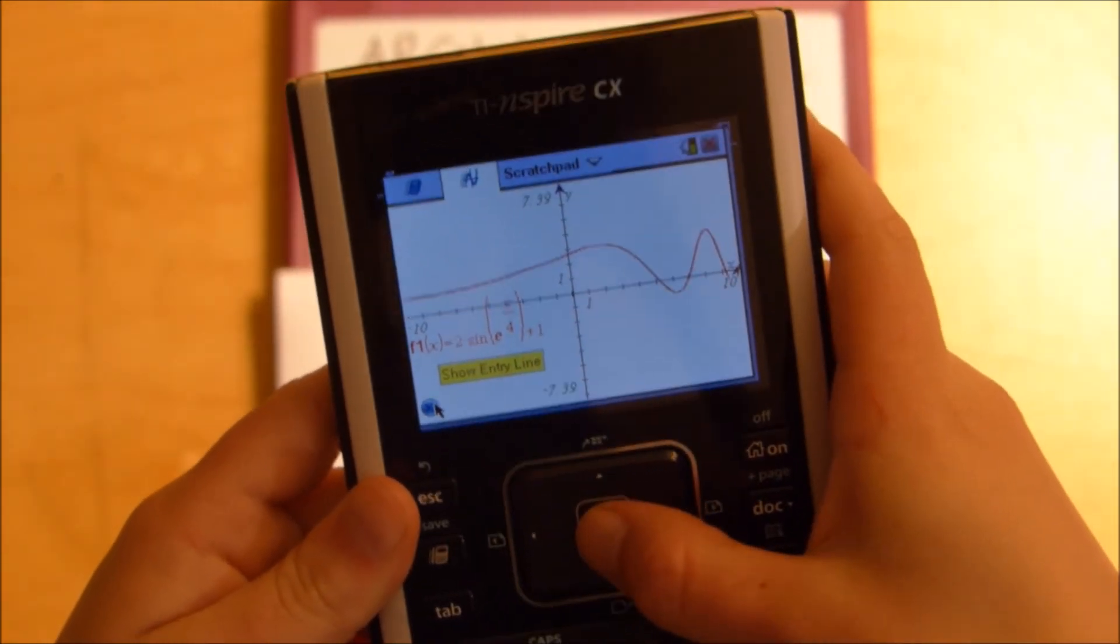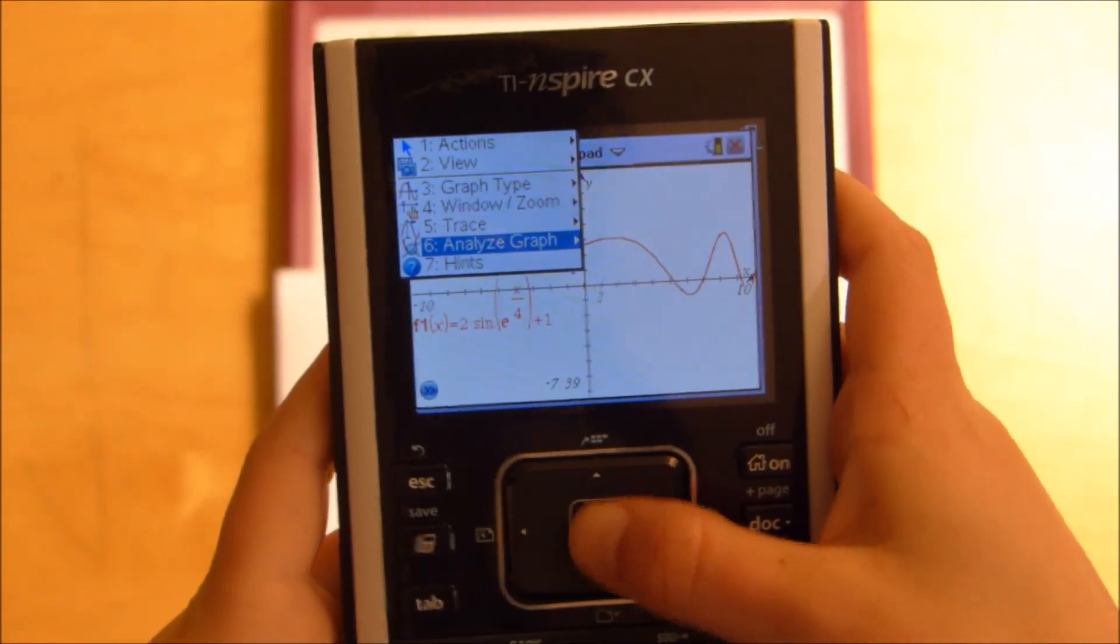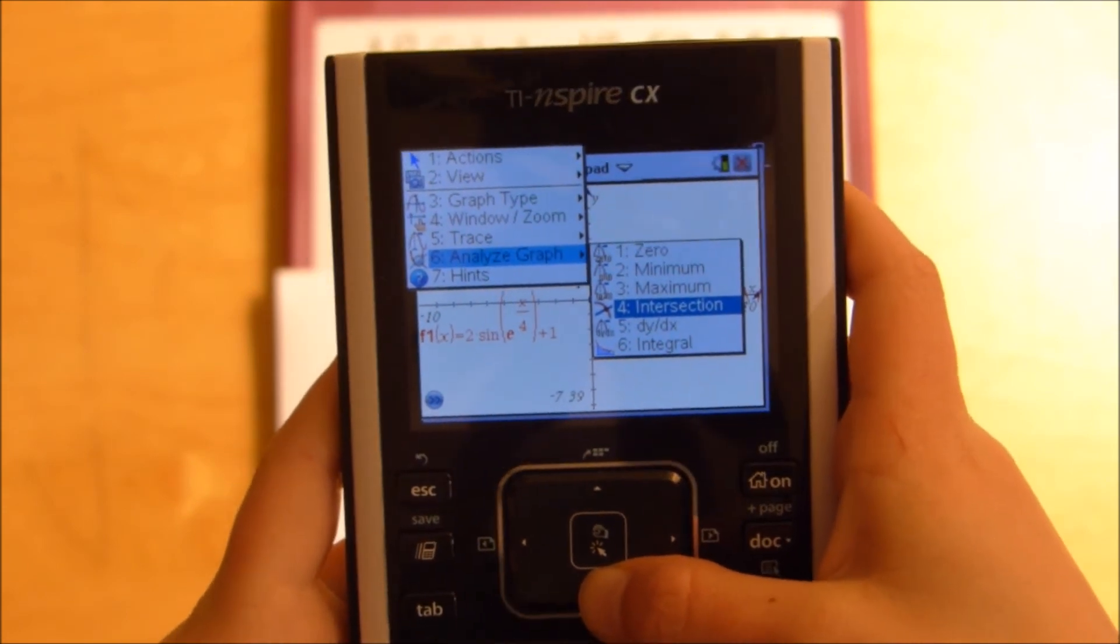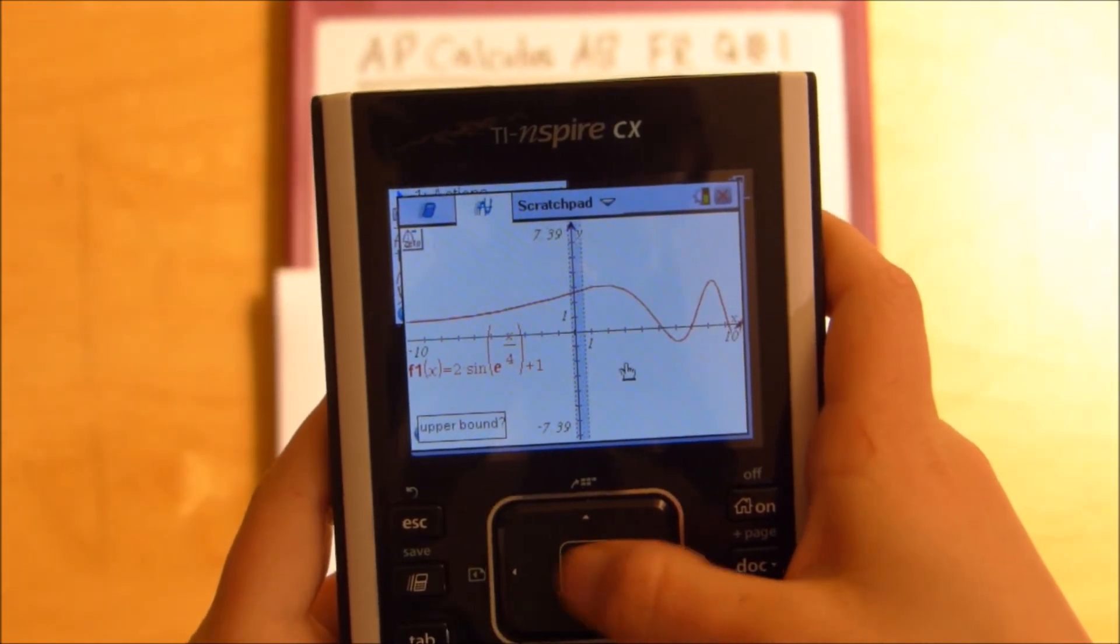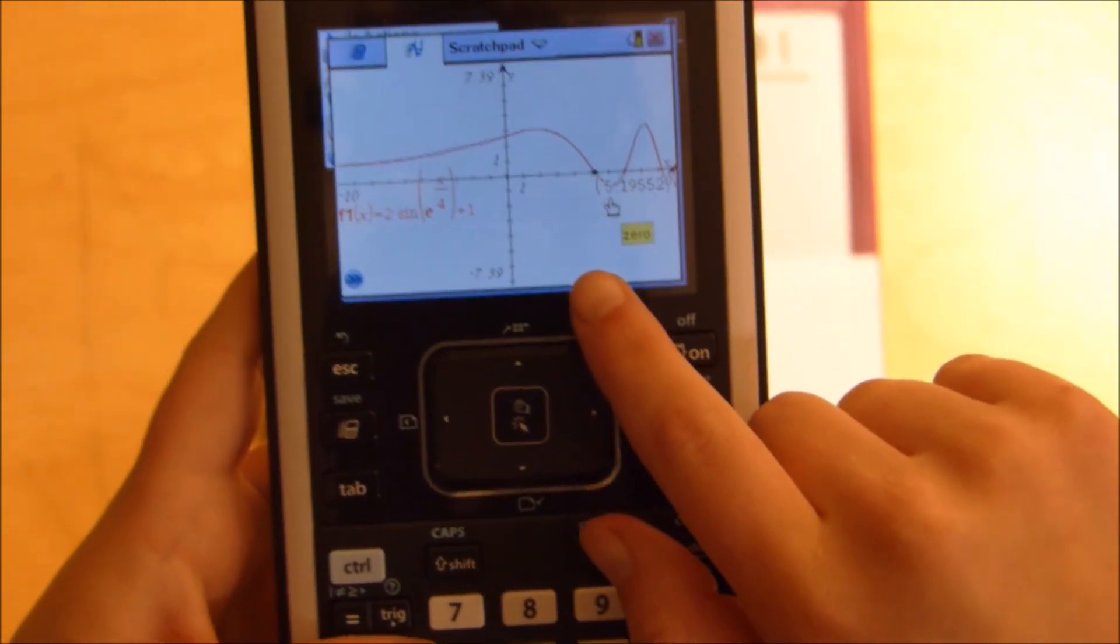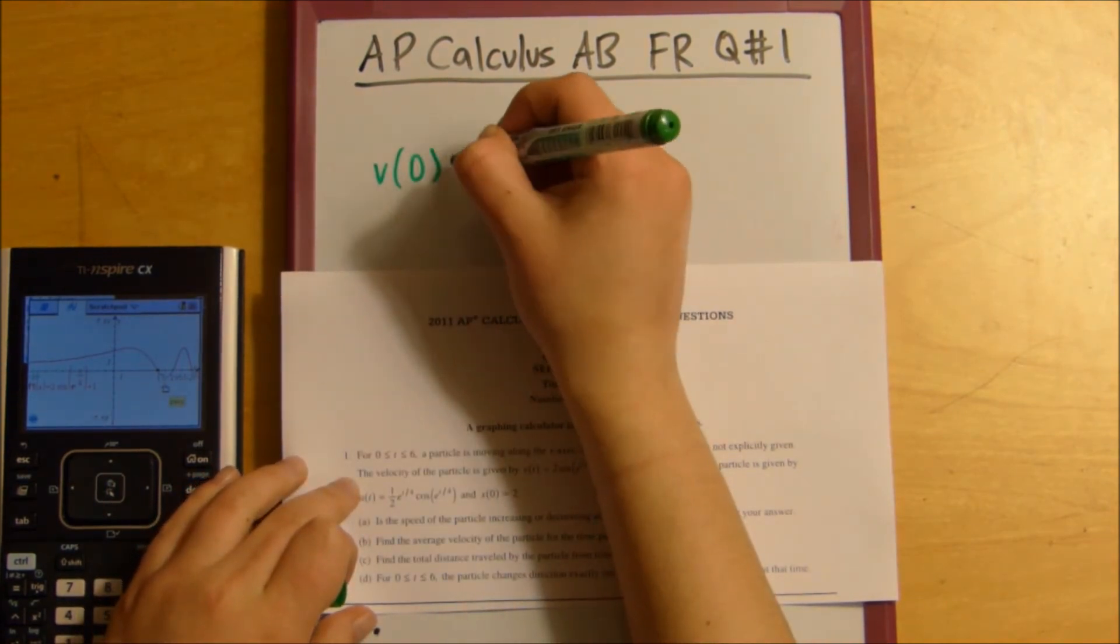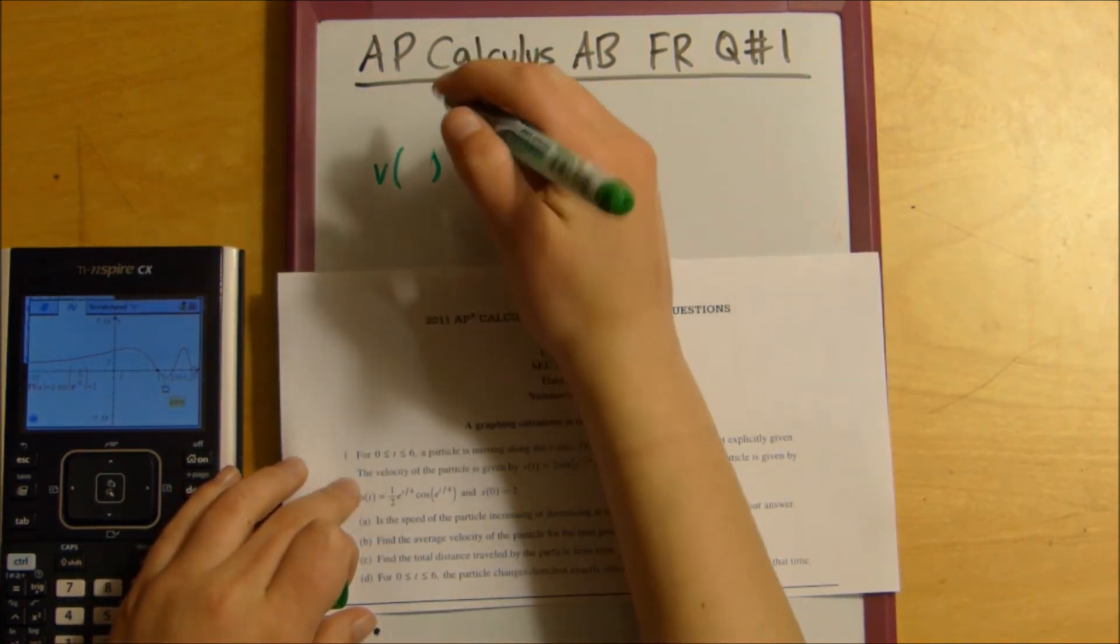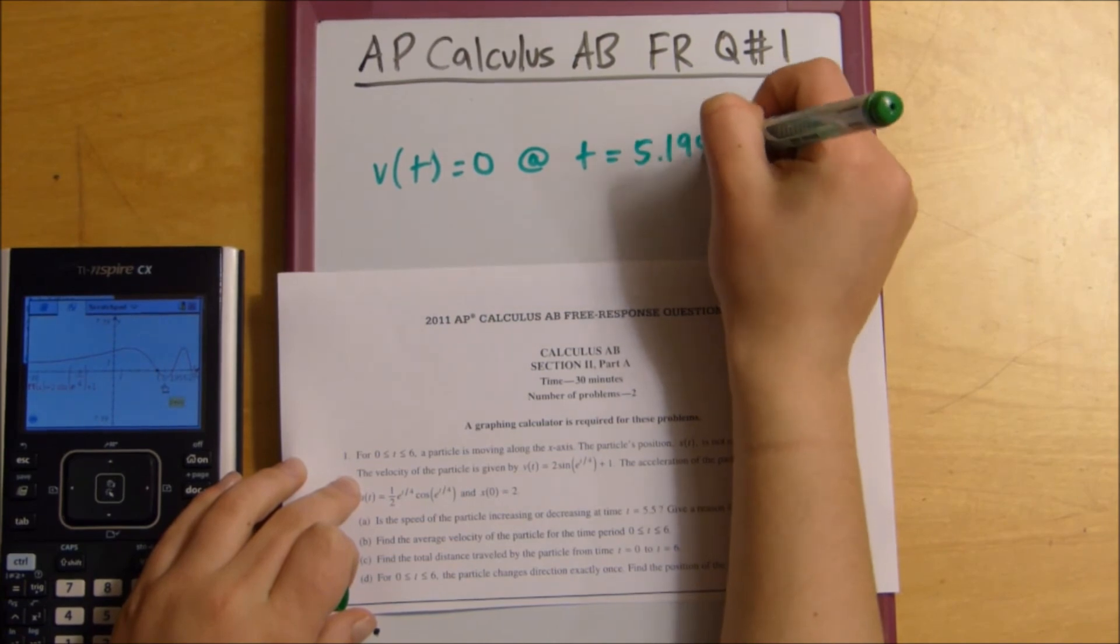So, what you could do is for TI Inspire, Analyze Graph and then 0. And then you set up your lower bound from 0 to 6, and we see that our 0 is 5.19552. So, that's where V of t equals 0 at t equals 5.195.